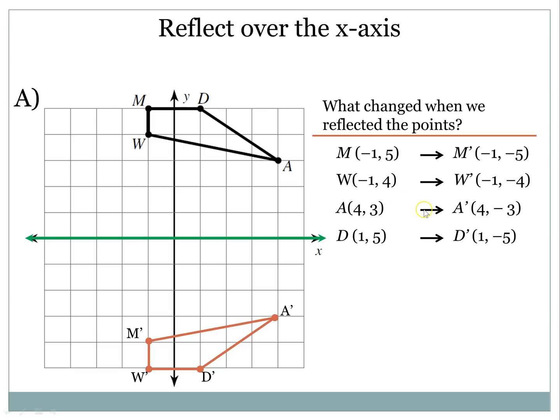So as we look at this list of points, we really want to just see what changes. Negative 1, 5, and M-prime is negative 1, negative 5. So the numbers themselves, the absolute values didn't change, it's a 1 and a 5 on both, but the prime, I have a negative 5. It looks like one of these changed signs, and if I look at the W, it's the same coordinate that changed signs, and if I look at the A to the A-prime, it is the same coordinate that changed signs again,